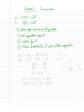Let's do that. 300 minus 2P equaling negative 80 plus 6P. Add 2P, add 2P, that gives me 8P. I'm going to add 80, add 80, that's going to equal 380.